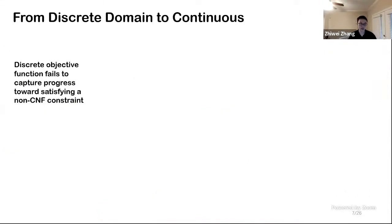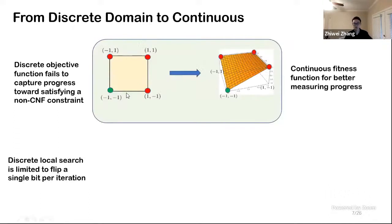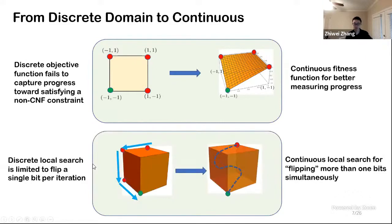So maybe staying in discrete domain is not enough. Here is what we are planning to solve those problems. As for discrete objective fails to capture progress, we plan to design a continuous fitness function to measure the progress. Since discrete local search is limited to flip a single bit per iteration, we are thinking of just search inside of the box and do continuous local search so that we are kind of flipping more than one bit simultaneously. Maybe we'll just flip each bit slightly, but we can manipulate a subset of bits instead of just one.